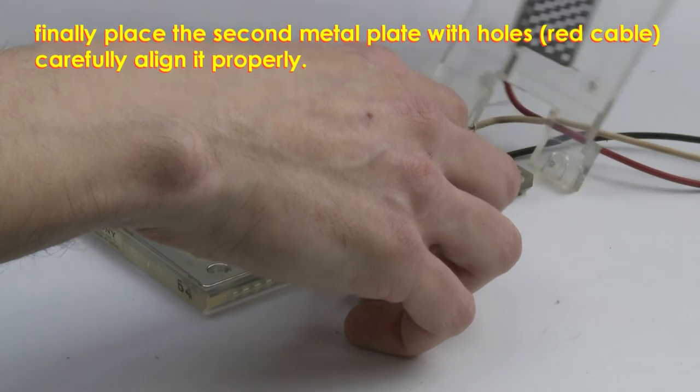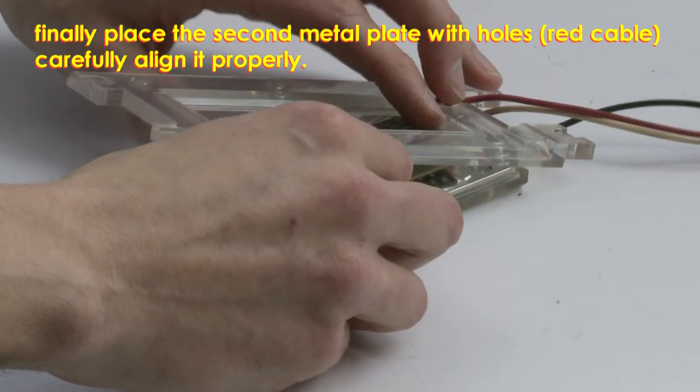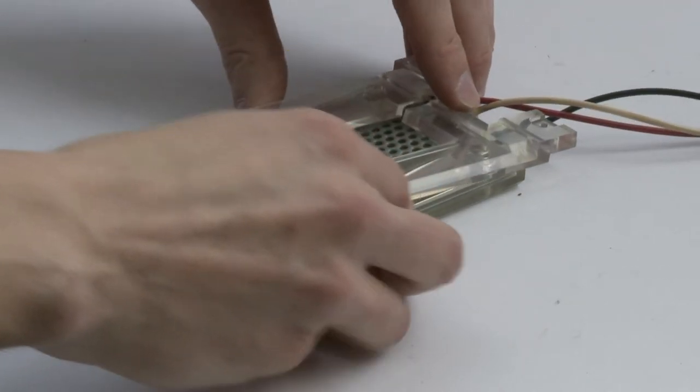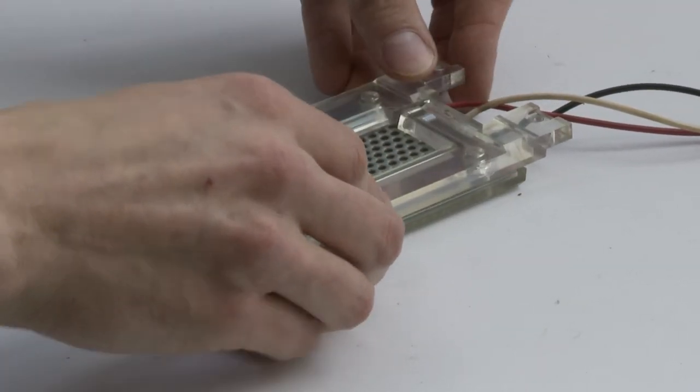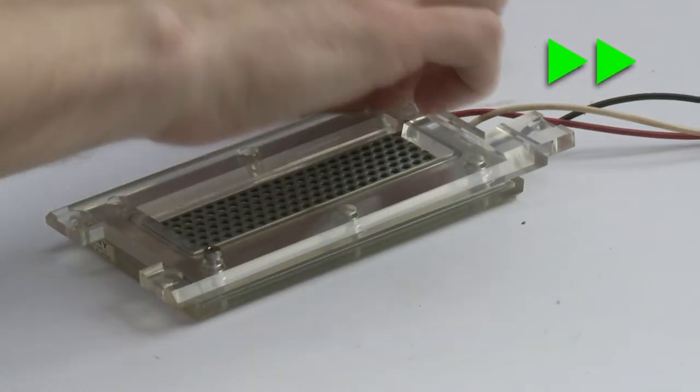And finally the second plate with holes with the red cable. Carefully align it and then finally the hard plastic cover with the holes to mount it. Tighten the electrostat with six screws.